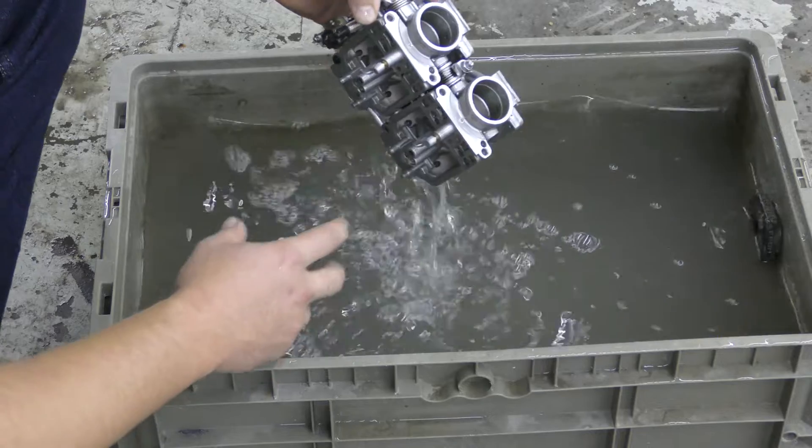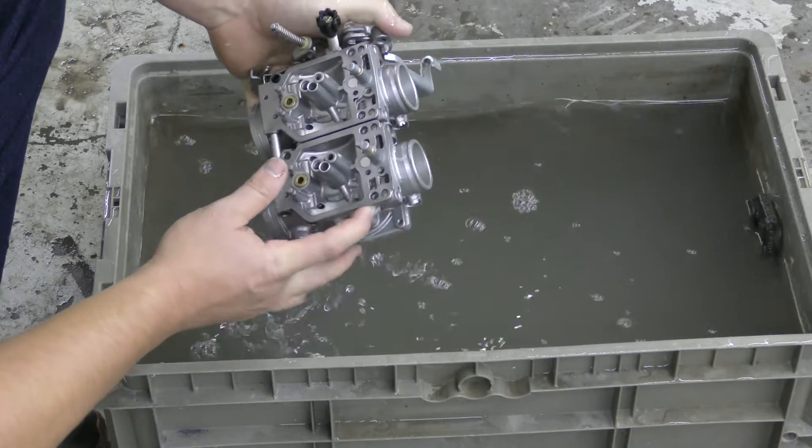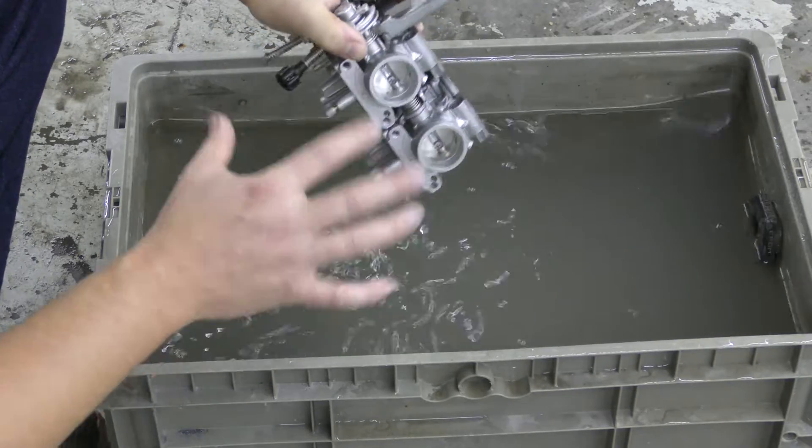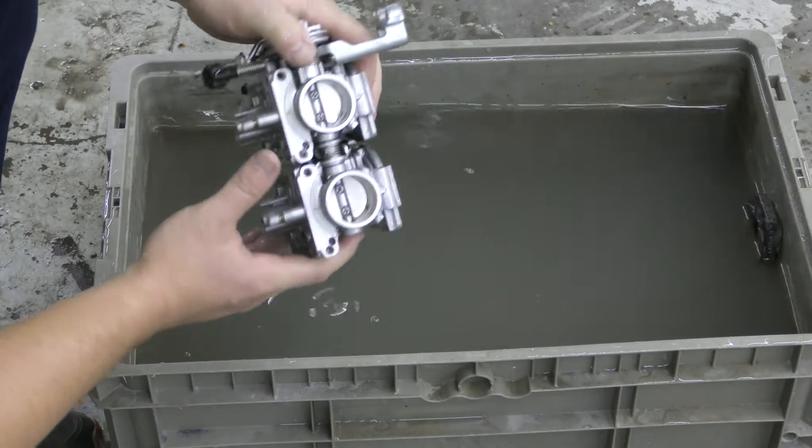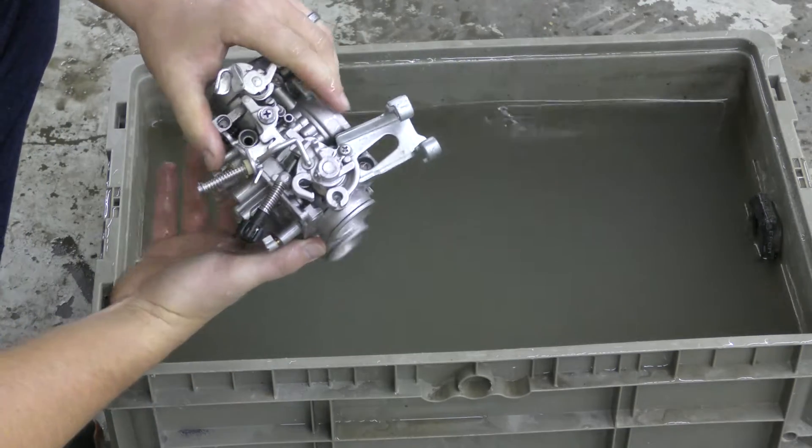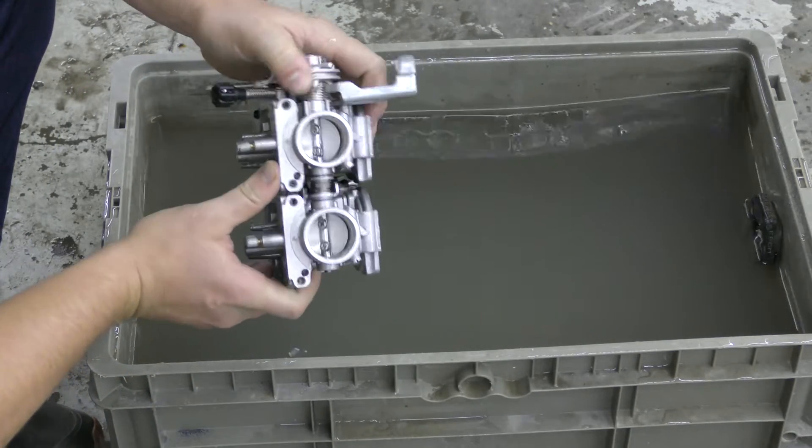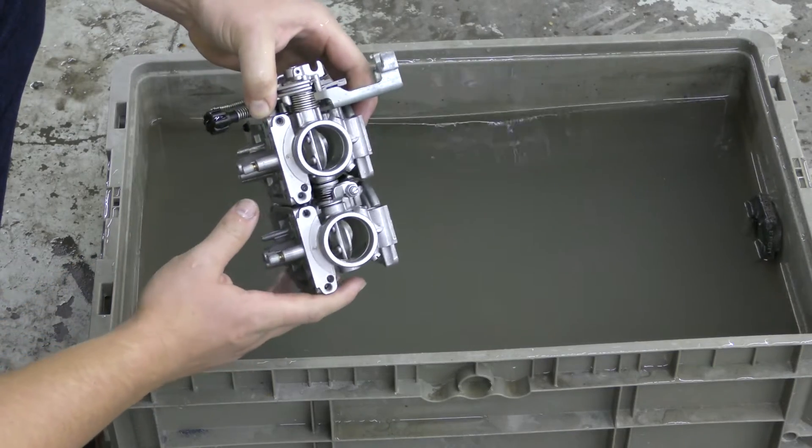So next time you're trying to rinse some hard to reach areas or a very detailed part, use a dip tank and put rust inhibitor in it if you're going to have ferrous and non-ferrous metals combined. That's what we do here at Vapor Honing Technologies.